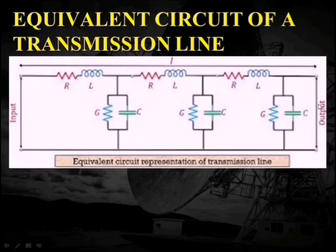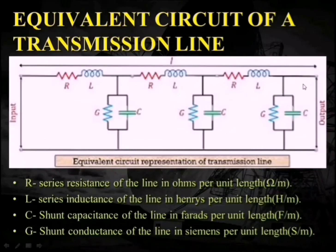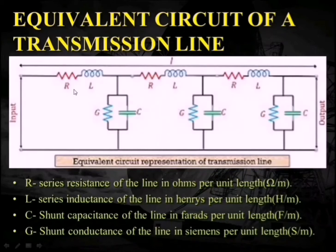From here we can conclude that the total resistance of this transmission line will be R multiplied by the distance, so if the length is L, the resistance will be R × L, and the units become Ohm per meter. Similarly, the total inductance will be L × L (small L), with units of Henry per meter. For capacitance, the units are Farad per meter, and for conductance, it is Siemens per meter.